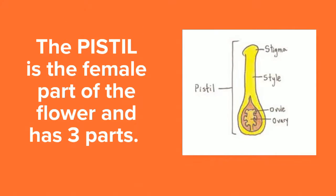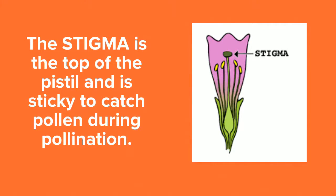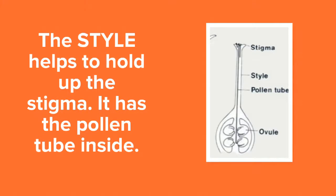The pistil is the female part of the flower and it has three parts: the stigma, the style, and the ovary, which has the ovules inside. The stigma is the top of the pistil and is sticky to catch the pollen during pollination. The style helps to hold up the stigma and has the pollen tube inside.